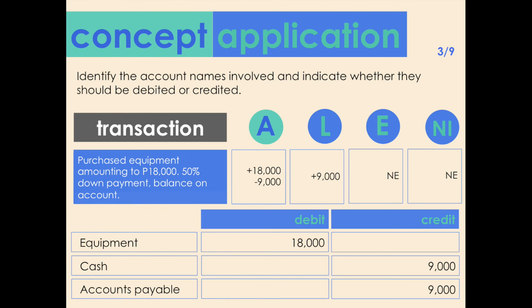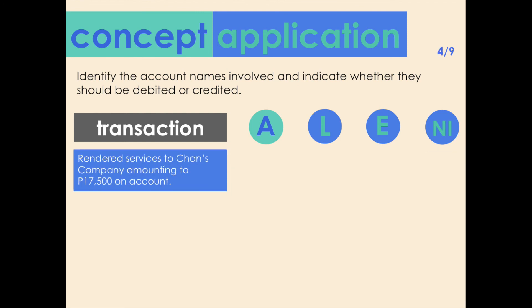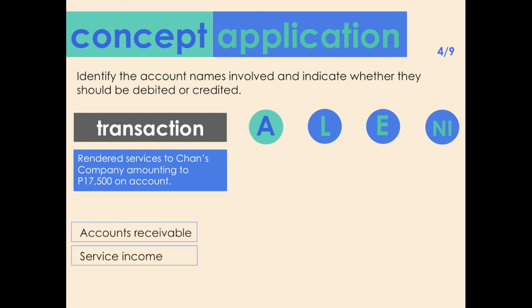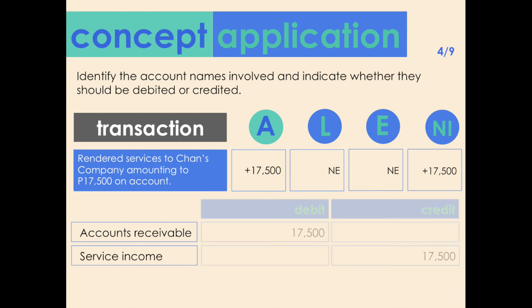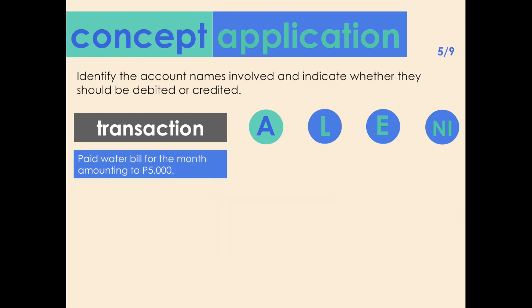Transaction four: rendered services to Chance Company amounting to 17,500 on account. Accounts affected: accounts receivable and service income. The transaction increases both assets and net income by 17,500. Accounts receivable should be debited since it is an asset increase, while service income should be credited since it is an income account. Both sides are equal.